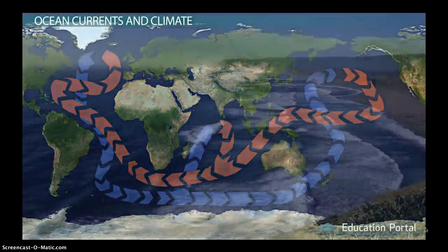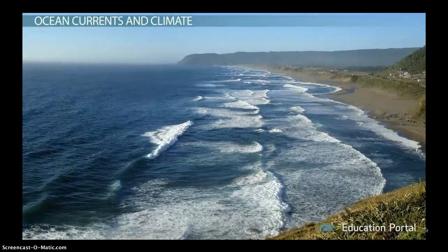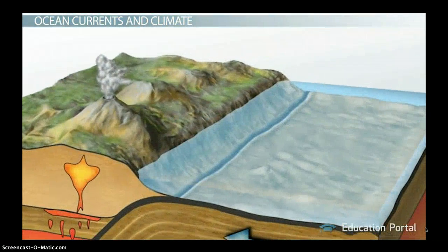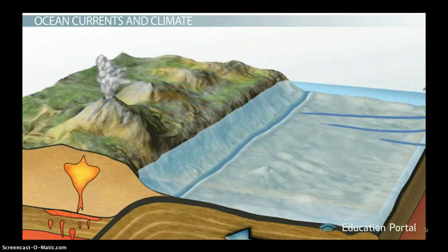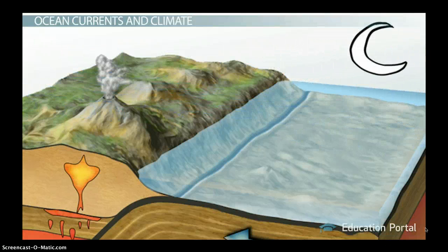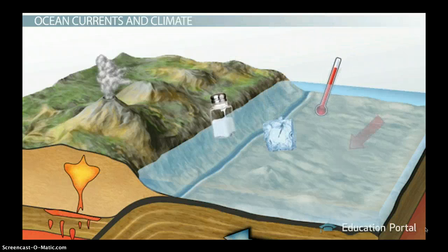Ocean currents travel at both the surface of the ocean as well as deep within the ocean basin. Currents are influenced by factors such as wind, the rotation of the earth, differences in the water's salt content, temperature, and density, and even the shape of the ocean floor.